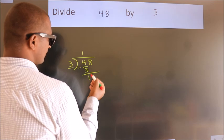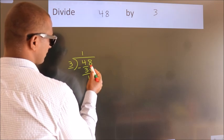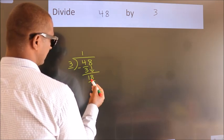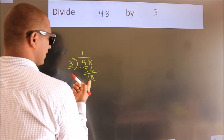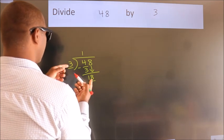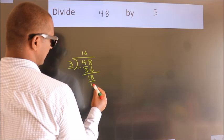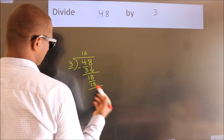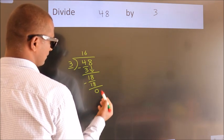After this, bring down the beside number. So 8 comes down, making 18. When do we get 18 in the 3 times table? 3 sixes are 18. Now we subtract. We get 0.